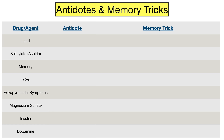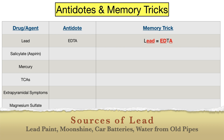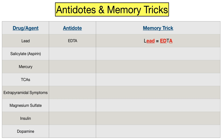We have one final group of antidotes. First we have lead. There are several treatment options for lead toxicity, one of which is EDTA — a chelating agent that binds tightly to metal ions, which is why chelating agents are used to remove toxic metals from the body. This is easy to remember because most of the word 'lead' appears in the letters EDTA. Other treatment options may include succimer or dimercaprol, also known as BAL. Sources of lead on exams may include lead paint in older homes, moonshine made in stills containing lead, car batteries, or water from old pipes.